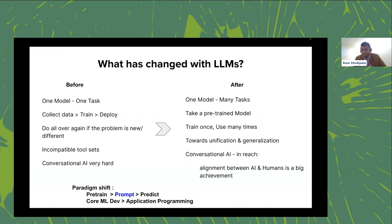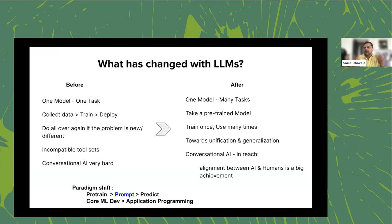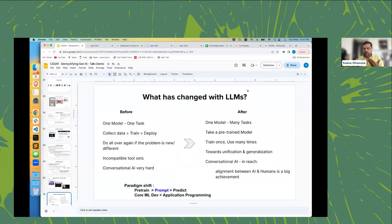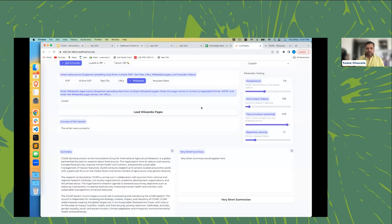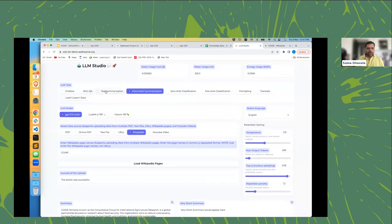One model can now do many many tasks, as opposed to one model per task — that's no longer the case. The behavior you want is specified in the input itself, making it a very rapid and versatile technological paradigm. I'll stop here on the theory and move to applications.